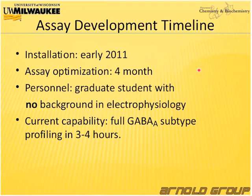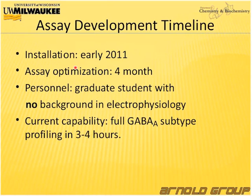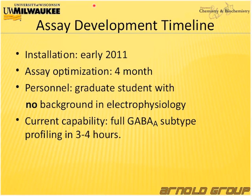We purchased the instrument in early spring 2012, and were able to optimize our assay within four months — a very short amount of time. We were very surprised, but the instrument is very easy to handle. As personnel, I had one graduate student who had no background in electrophysiology, but she was able to pick up the assay very quickly. We are now at a point where we can determine the subtype selectivity of benzodiazepines within three to four hours, profiling all the different GABA-A receptors having the different alpha subunits.